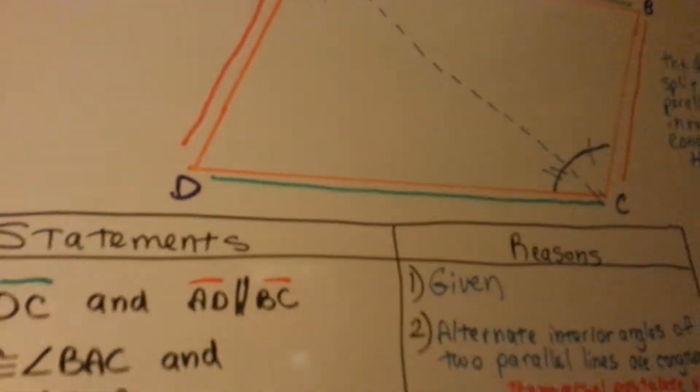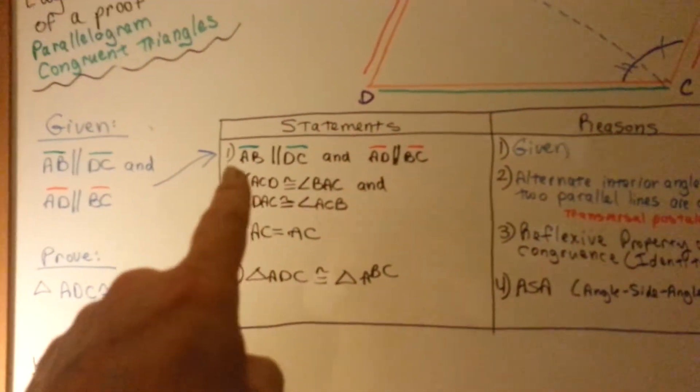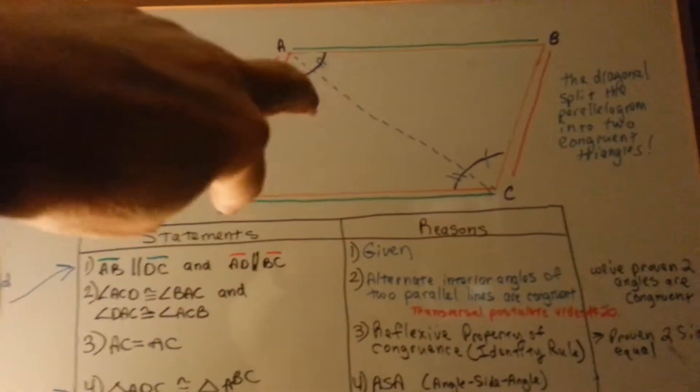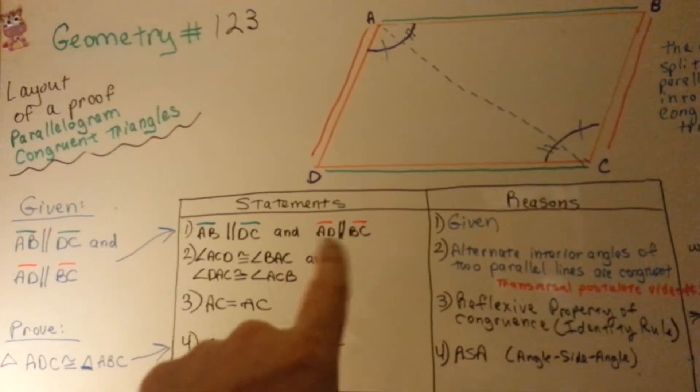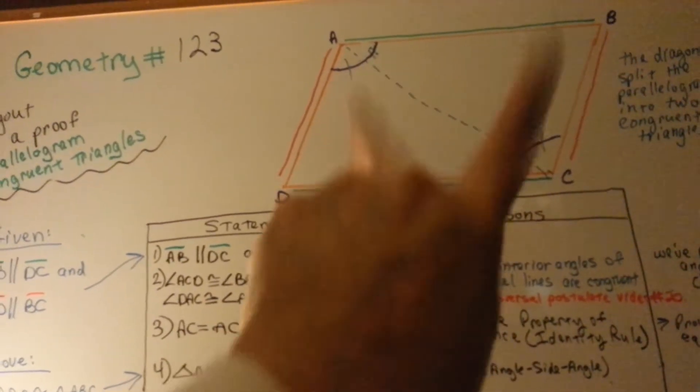Alright, so now let's see what we've got. We've got our given that AB and DC are parallel. We know that. And that AD and BC are parallel. That's given.